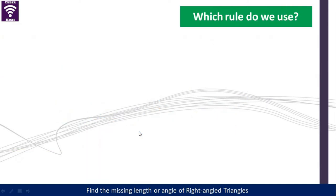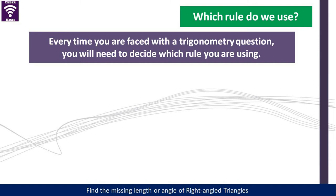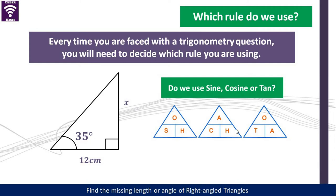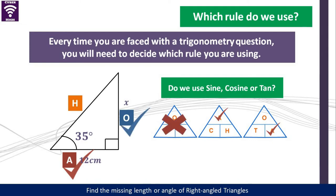When you are faced with a trigonometry question, you need to decide which rule to use. To decide on which rule to use, first you have to identify what you have been given. We have an example of a triangle here. We've been given an angle. This is the adjacent side and obviously this is the opposite. So you have to label the sides that you have been given. Now we are supposed to tick what we have been given and cross out what we haven't been given. We have adjacent, so we look here and tick where we have an A for adjacent. That eliminates the first one. We have the opposite side — so we are going to use the tangent.